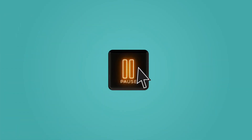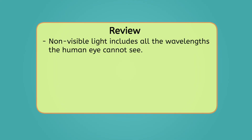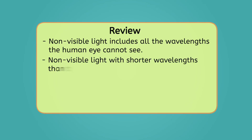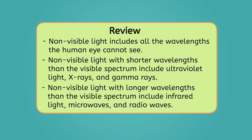Non-visible light makes up much more of the electromagnetic spectrum than visible light does. Pause the video here and complete the diagram of the whole light spectrum in your guided notes now. Let's review everything we've learned about non-visible light. Non-visible light includes all the wavelengths the human eye cannot see. Non-visible light with shorter wavelengths than the visible spectrum includes ultraviolet light, X-rays, and gamma rays. Non-visible light with longer wavelengths includes infrared light, microwaves, and radio waves.